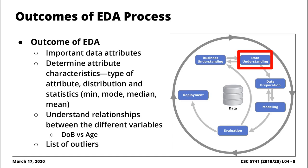Once you're done with the EDA process, you should be able to identify the key or significant attributes associated with your dataset. There are times when you can rule out the necessity of including a particular independent variable just because the EDA process shows it's not useful. You also want to determine the different characteristics of your data attributes by performing basic descriptive statistics — things like minimum and maximum values, averages, medians, and frequency tables should be sufficient.